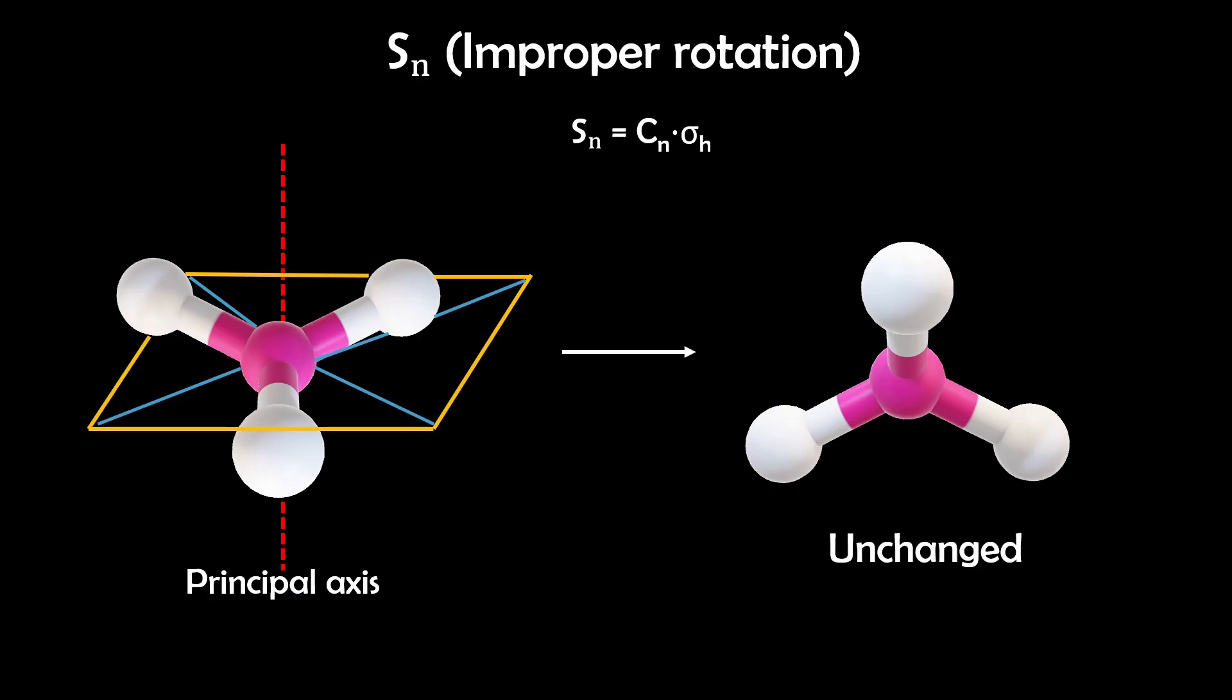Improper rotations are common in highly symmetric molecules, but are absent in chiral molecules, and this is one of the reasons why chirality actually exists.